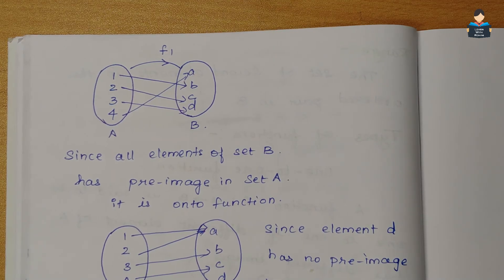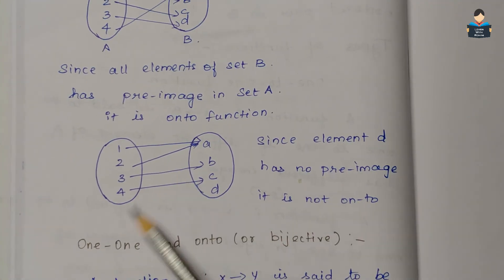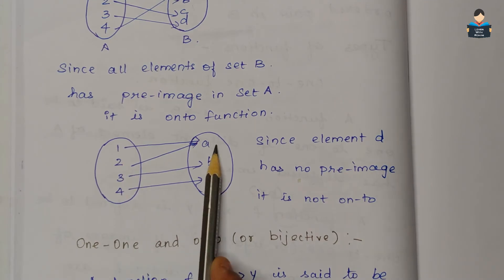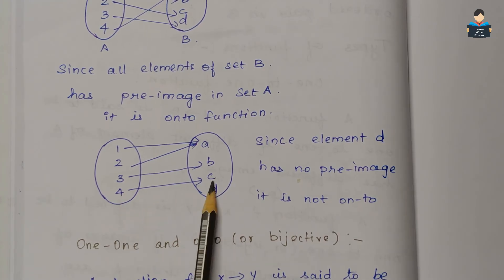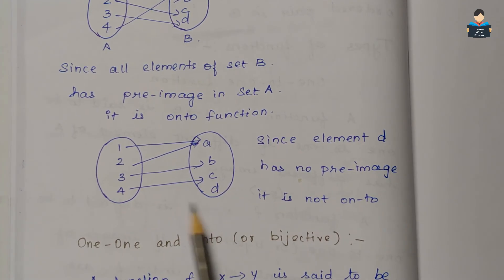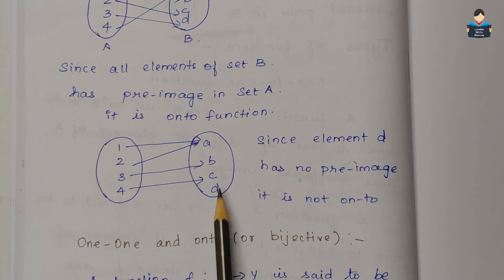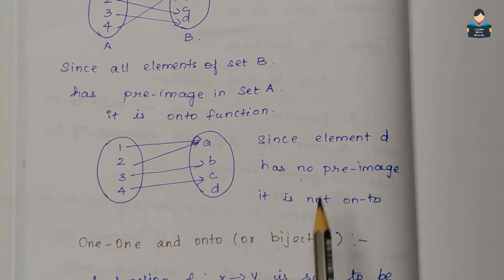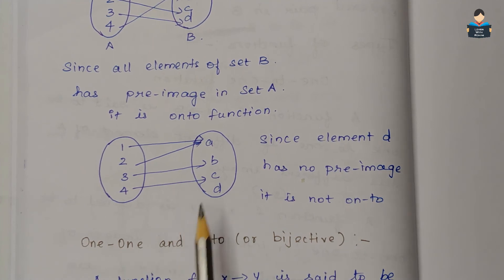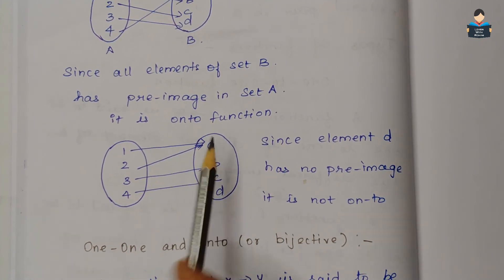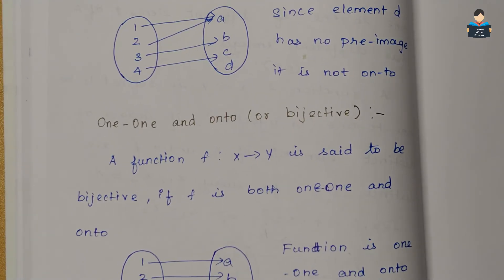Here is another example: 1 maps to a, 2 maps to a, 3 maps to b, c is mapped, d is mapped. But D is left over — D has no pre-image. So this is not an onto function.